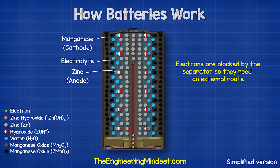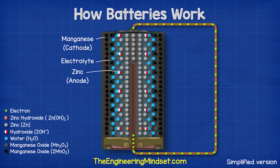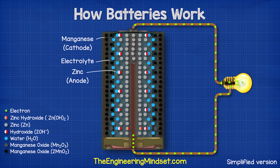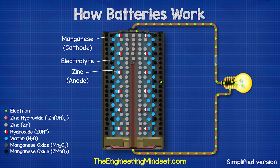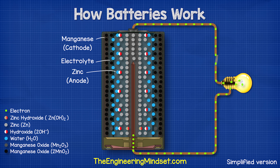Therefore the electrons need another route. If we provide an external path such as a wire, the electrons will flow through it to reach the positive terminal. By placing things such as a lamp in the way, the electrons must pass through it, so we get them to do work — such as illuminating the lamp. As long as we have a complete circuit between the terminals, the chemical reaction keeps occurring and electrons flow from the negative terminal. If we remove the wire or break the circuit, the chemical reaction stops.